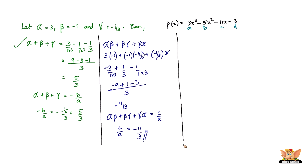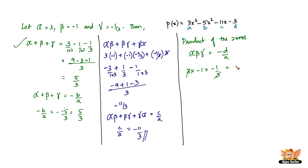The last relationship is the product of all zeros: alpha times beta times gamma, which should equal minus D by A. So 3 times minus 1 times minus 1 by 3: the 3 cancels, and minus 1 times minus 1 is plus 1, giving 1. Now minus D by A: D is minus 3 and A is 3, so minus of minus 3 divided by 3 equals plus 3 over 3, which equals 1. Therefore the product of the zeros equals minus D by A. Hence verified.